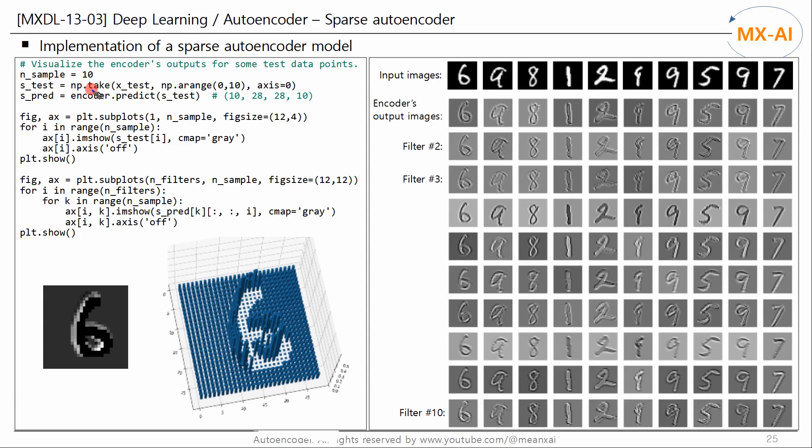Finally, let's visually check the encoder's outputs for 10 test data points. We input 10 test data points into the encoder model and get the output values. The shape of the encoder output is 10 by 28 by 28 by 10. The first dimension 10 is the number of test data points. And the last 10 is the number of filters in the encoder output layer.